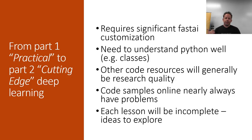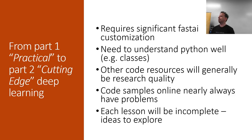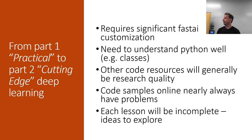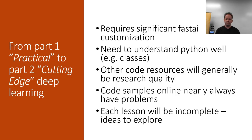Rather than FastAI and PyTorch being obscure black boxes that you just know recipes for, you're going to learn the details well enough that you can customize them exactly the way you want, debug them, and read the source code to see what's happening. If you're not pretty confident in object-oriented Python and things like that, that's something you'll want to study during this course, because I'm not going to spend time on it. But I will introduce you to some tools I think are particularly helpful, like the Python debugger and how to use your editor to jump through code.